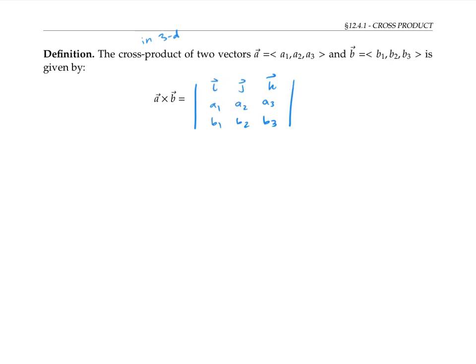By that I mean we take the first entry i and we multiply it by the determinant of the sub-matrix a2, a3, b2, b3, that we would get by crossing out the row and column that i is in.